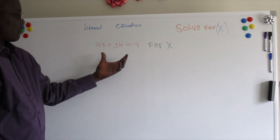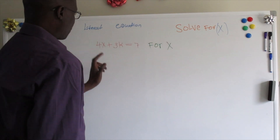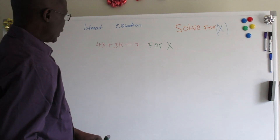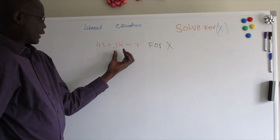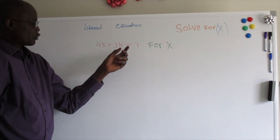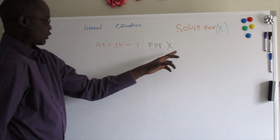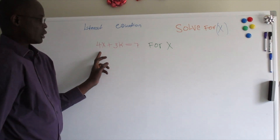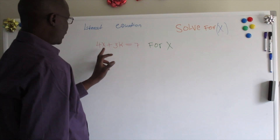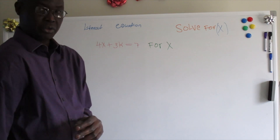How we solve this type of problem: we're going to subtract 3k from both sides of the equation, then simplify, and then divide the whole equation by 4.